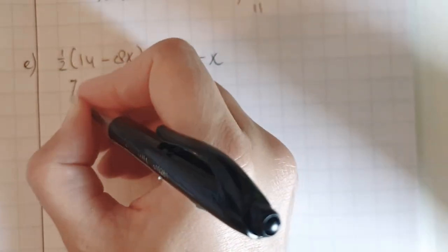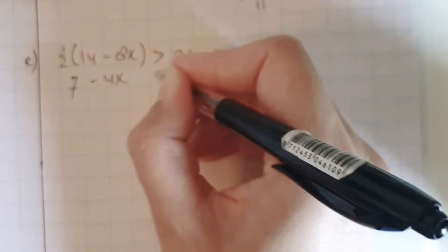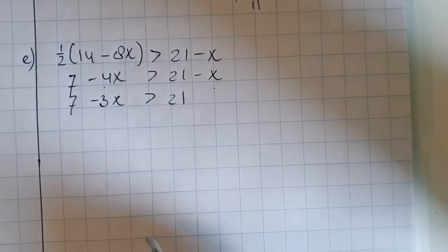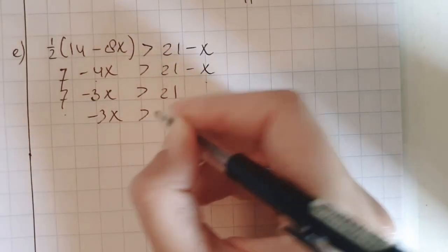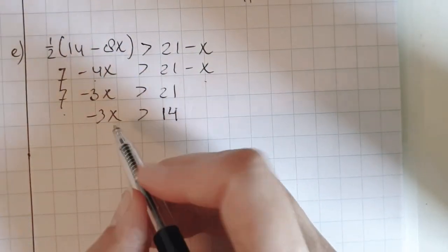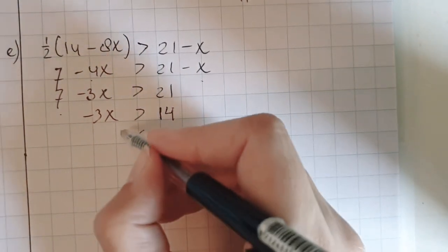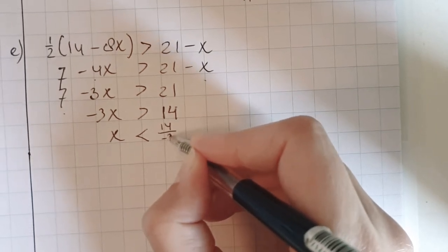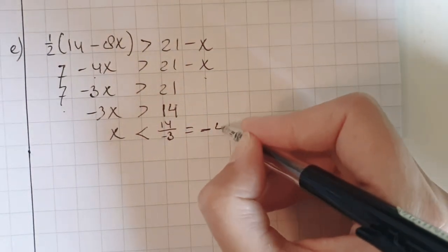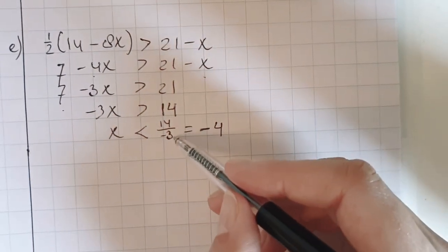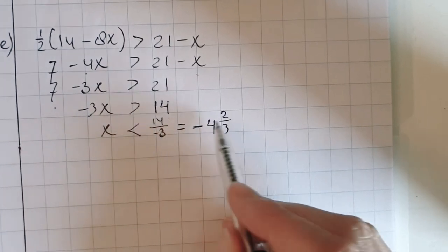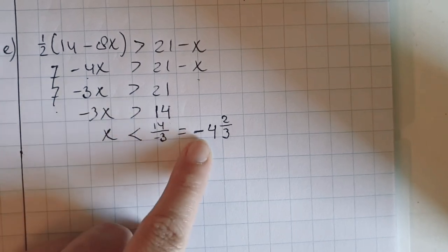A half times 14 is 7, and a half times minus 8x is minus 4x. Plus x on this side, plus x on that side. And minus 7 here, minus 7 there. Divide by minus 3 on both sides — that's a negative number, so the symbol is changing. So it's 14 divided by minus 3. The answer is going to be negative. How many whole numbers? 4 whole numbers. And the left over is — 12 divided by 3 is 4, so left over is 2 thirds. So the answer is x is smaller than minus 4 and 2 thirds.